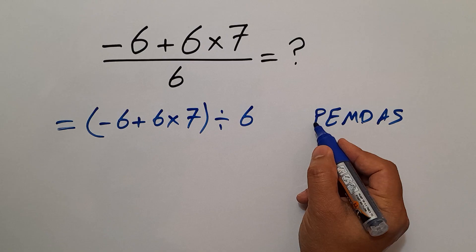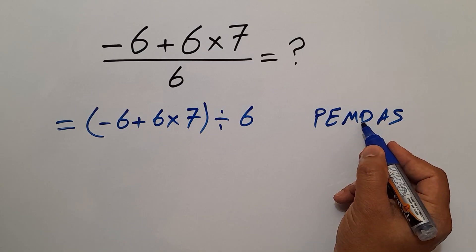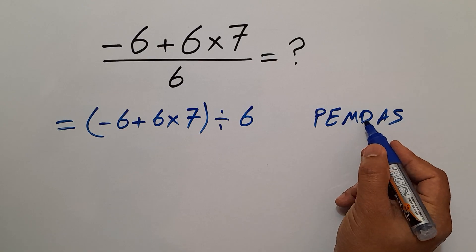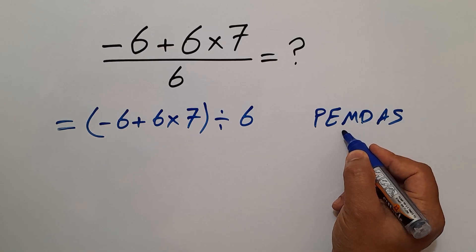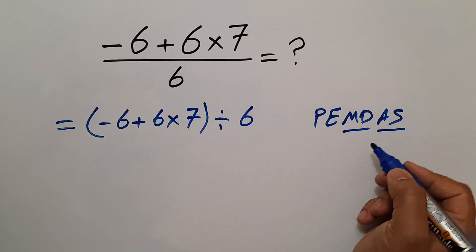Remember that multiplication and division have equal priority, and we work from left to right. The same applies to addition and subtraction. Now here, first we do this parentheses, and inside these parentheses we have this addition and this multiplication.